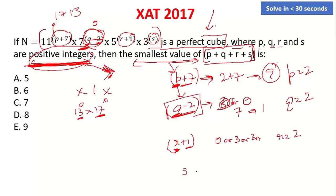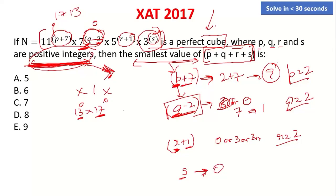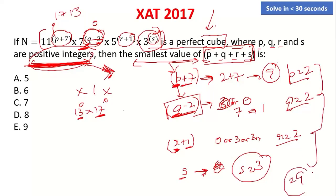Next, 3 is raised to the power s. This must be a multiple of 3, and s must be a positive integer — so s cannot be 0. The minimum value s can take is 3. So the smallest value of p plus q plus r plus s is 2 plus 2 plus 2 plus 3, which equals 9. That is the answer.